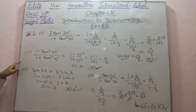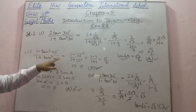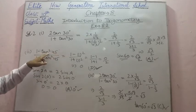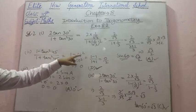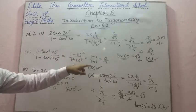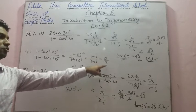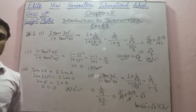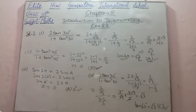Second part: (1 − tan²45°) / (1 + tan²45°). Since tan 45° = 1: (1 − 1) / (1 + 1) = 0/2 = 0. So option D is correct.